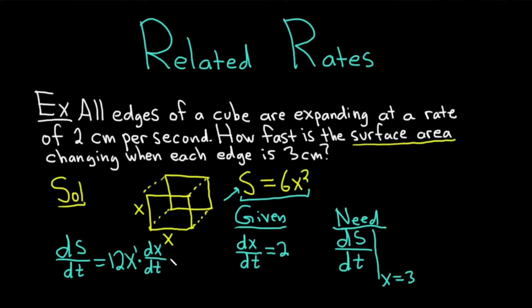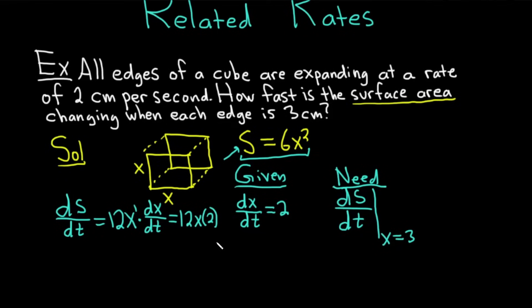Okay, we know something. We know dx/dt. So this is equal to 12x. dx/dt is 2 times 2. So we have now that dS/dt is equal to, let's see, 2 times 12 is 24. So that's 24x.